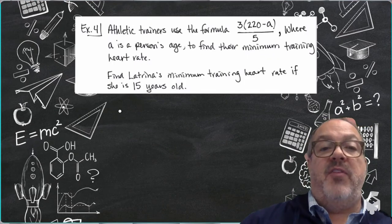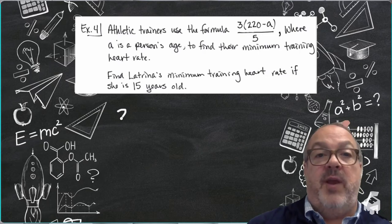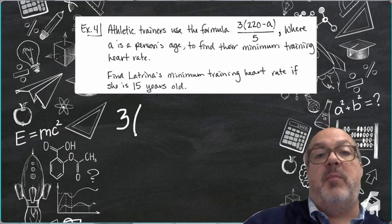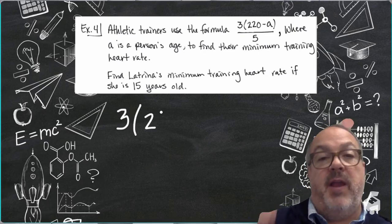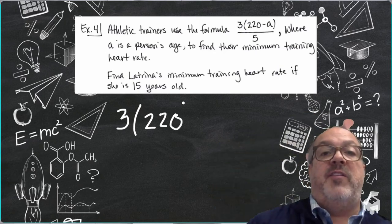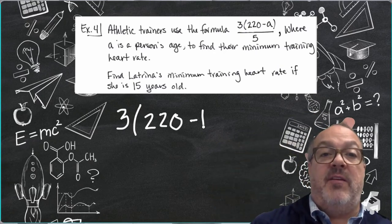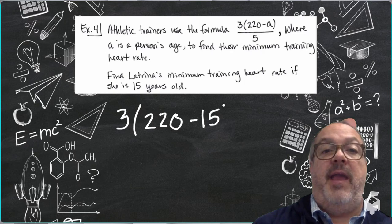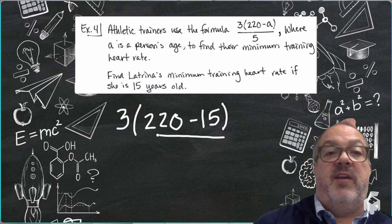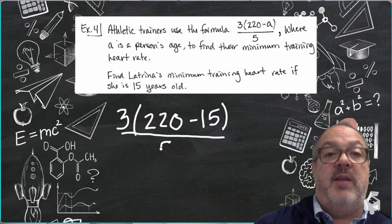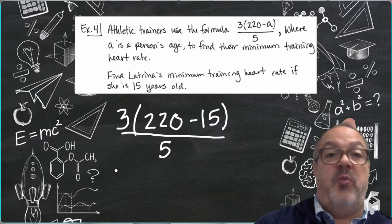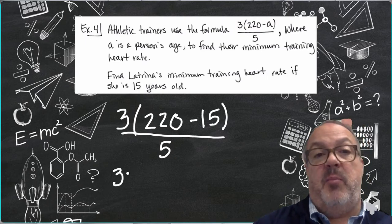So, I've got this formula that athletic trainers will use to figure out somebody's maximum training heart rate. So I'm going to substitute 15 for the variable A, and then I'm going to rewrite the expression as 3 times the quantity 220 minus 15 divided by 5.